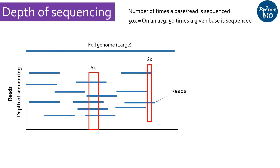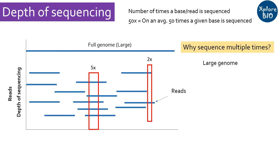But why do we need to have genomic regions sequenced multiple times? Most genomes or gene sequences are quite large to be sequenced in one go by existing sequencers. So the genome is fragmented, then sequenced and reassembled to form a genome assembly. Errors during sequencing do happen, and sequencing the genome just one time may not give complete and accurate information.